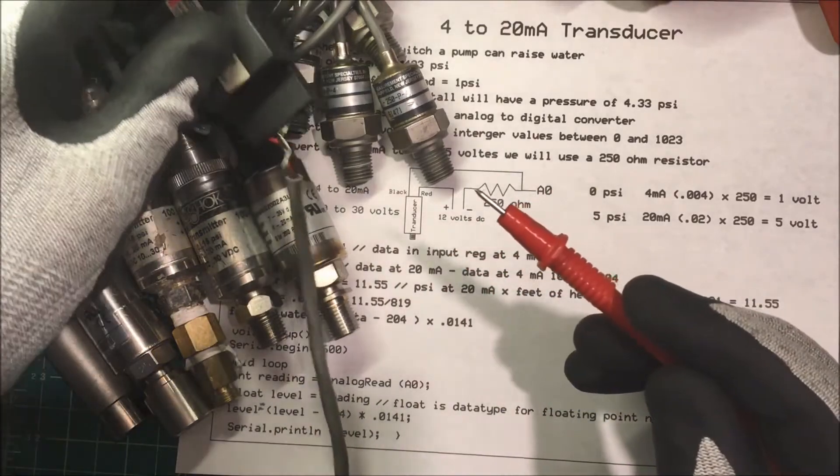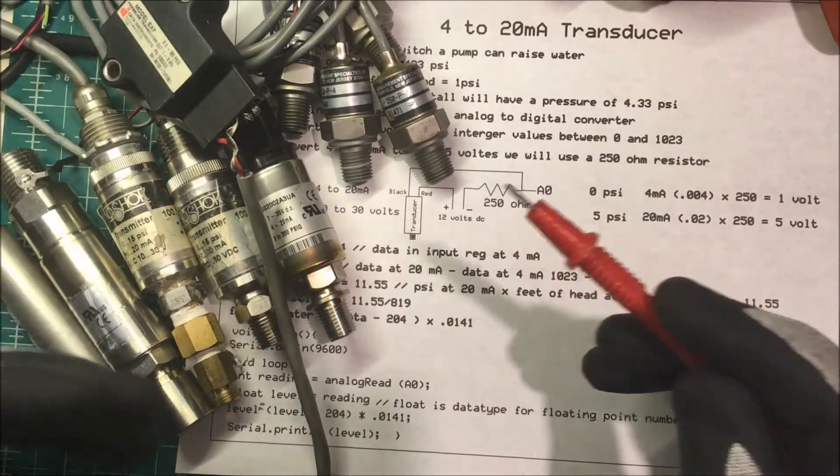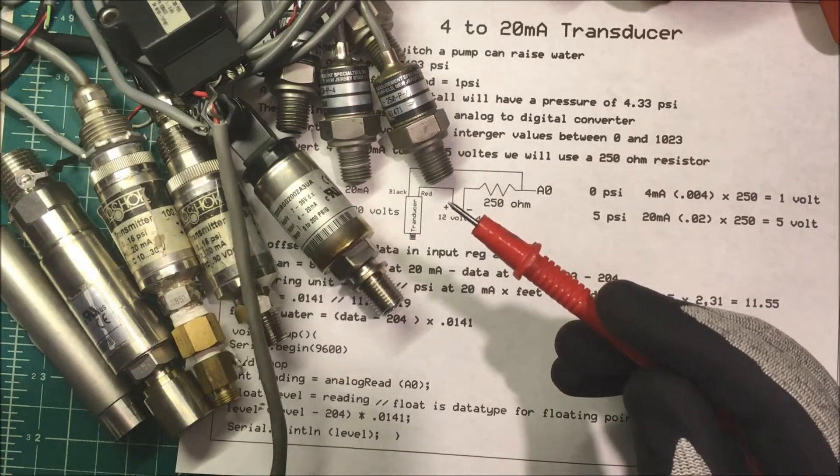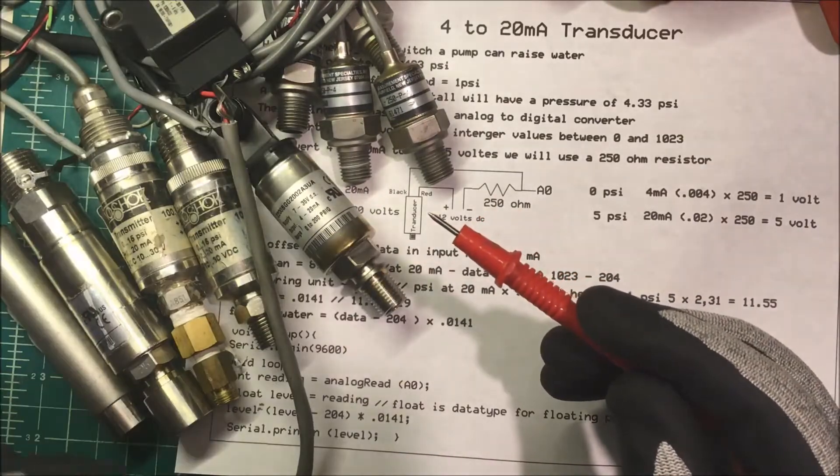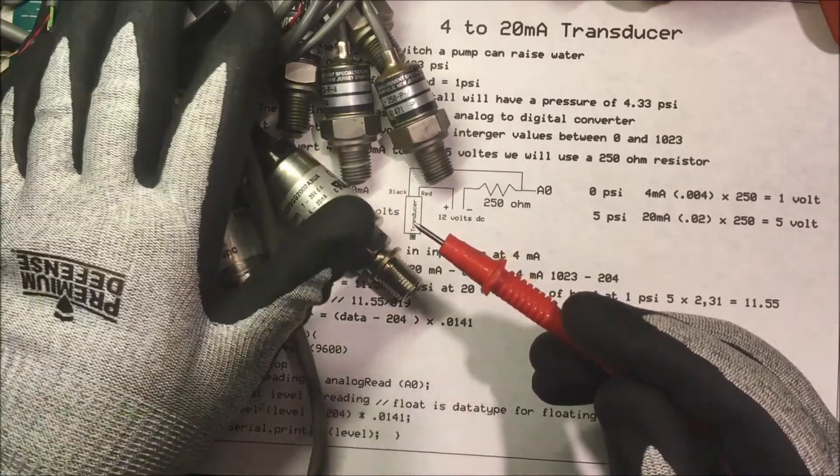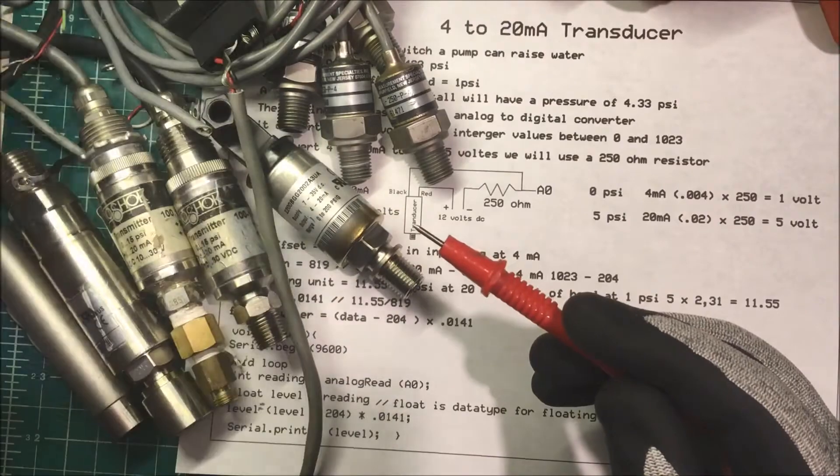Now some of the original PLCs didn't have analog inputs, so we would just use one of these and we could count the frequency coming in. It puts out a square wave and we could calculate the amount of pressure by counting up the frequency coming in.